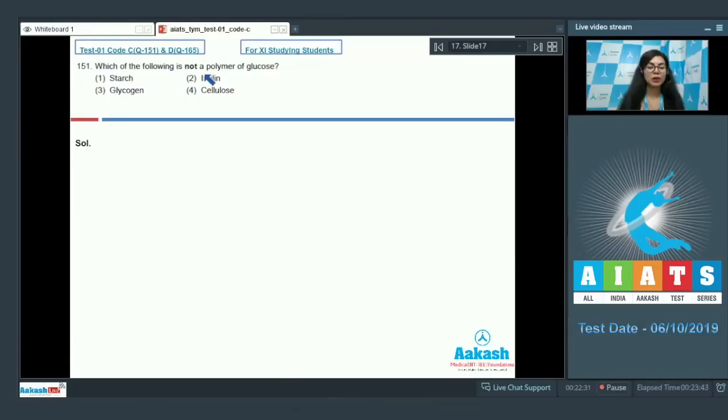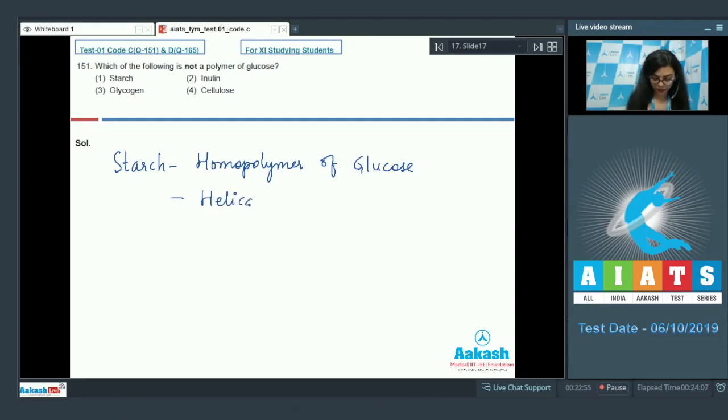Question 151 asks which of the following is not a polymer of glucose: starch, inulin, glycogen, or cellulose. Let's go over them one by one. Starch is a homopolymer of glucose made up of glucose subunits or residues.